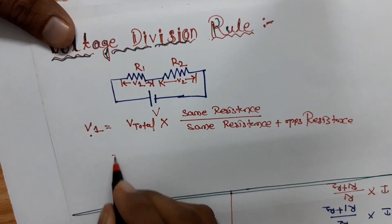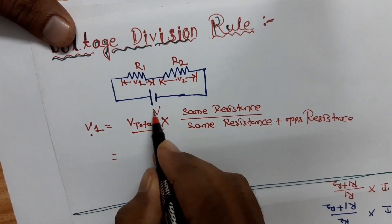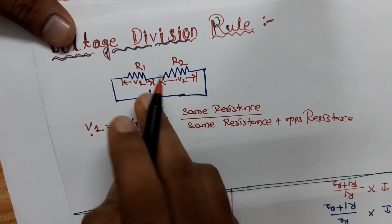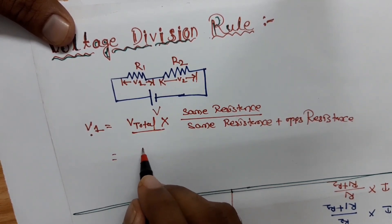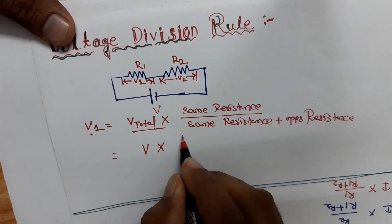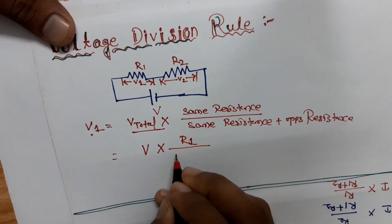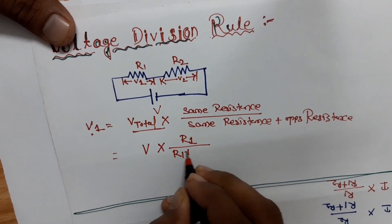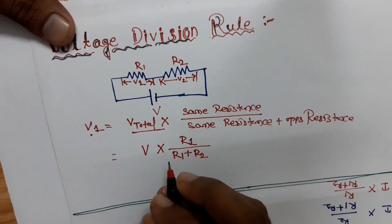Putting in the values: V total is V, since this voltage is divided between R1 and R2. So V1 equals V into R1, divided by R1 plus R2. This is just the reverse of the current division rule.